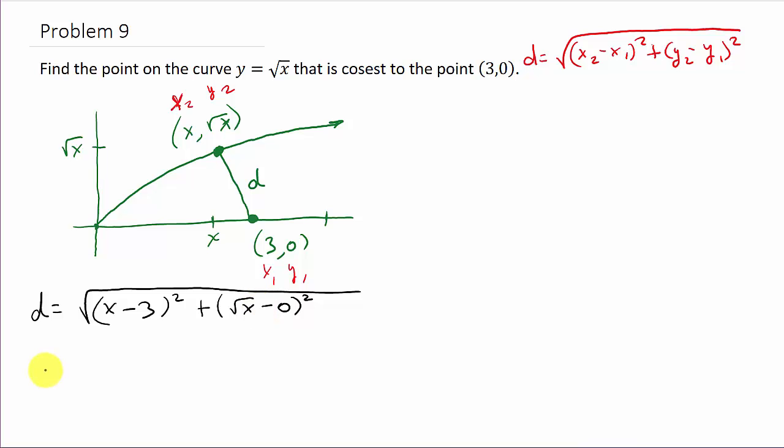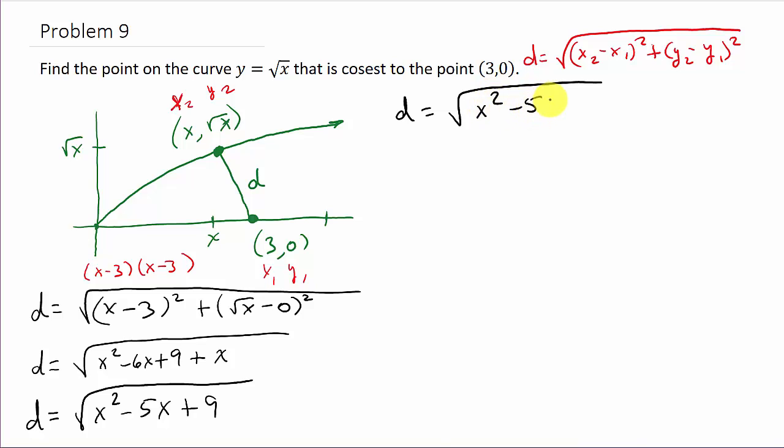So the distance is going to be the square root of (x minus 3) squared plus (square root of x minus 0) squared. This is x squared minus 6x plus 9 plus x. Remember, (x minus 3) squared is (x minus 3) times (x minus 3). So I get my distance is the square root of x squared minus 5x plus 9. That's what we need to minimize.